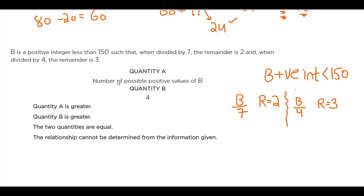And the question asking a number of possible positive values of B. So I'm like, hey, how many numbers can be B? And quantity B is four. So these types of questions, these remainder questions always demand some type of equation that you need to form.